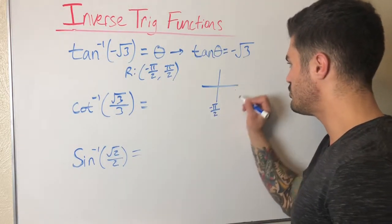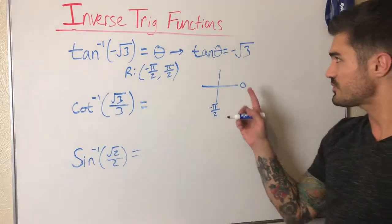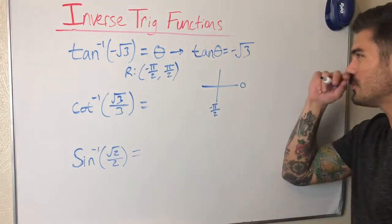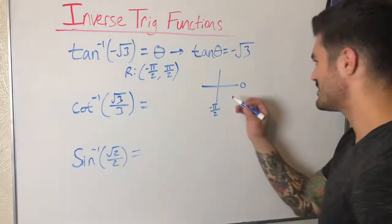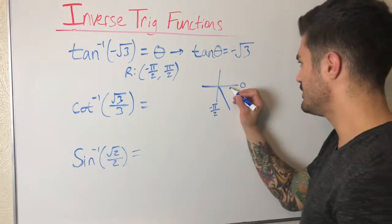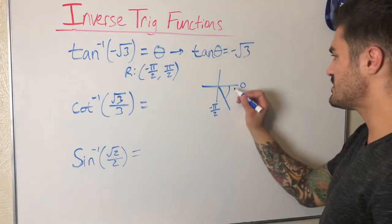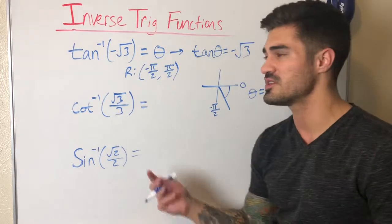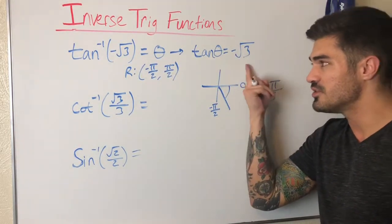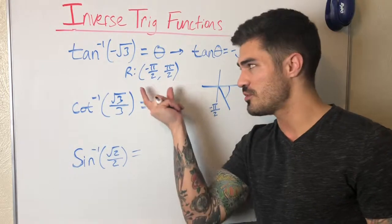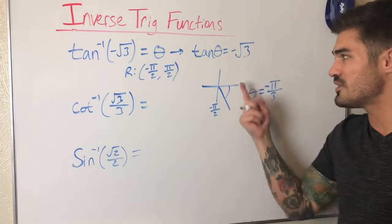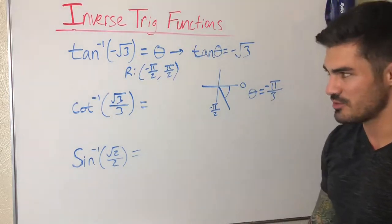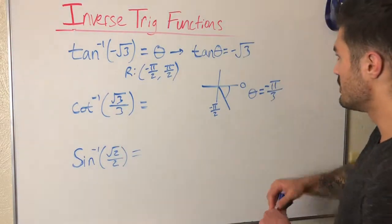So theta has to be somewhere between negative pi over two and zero. We need the reference angle that gives us root three — that's pi over three. So theta equals negative pi over three. The step-by-step process: set it equal to theta, switch theta and the value using the definition of inverse, write out your range, use the sign of the value to find the quadrant, find your reference angle, and find theta. That's the process.